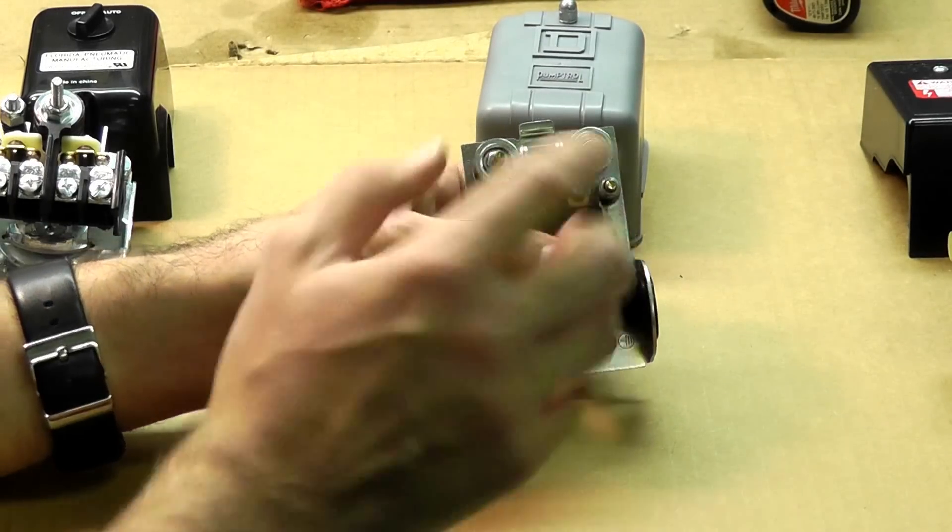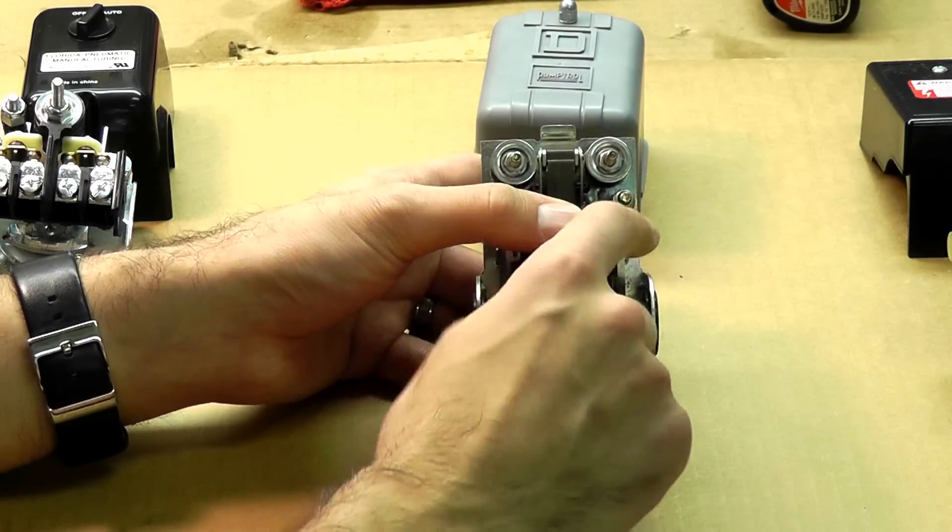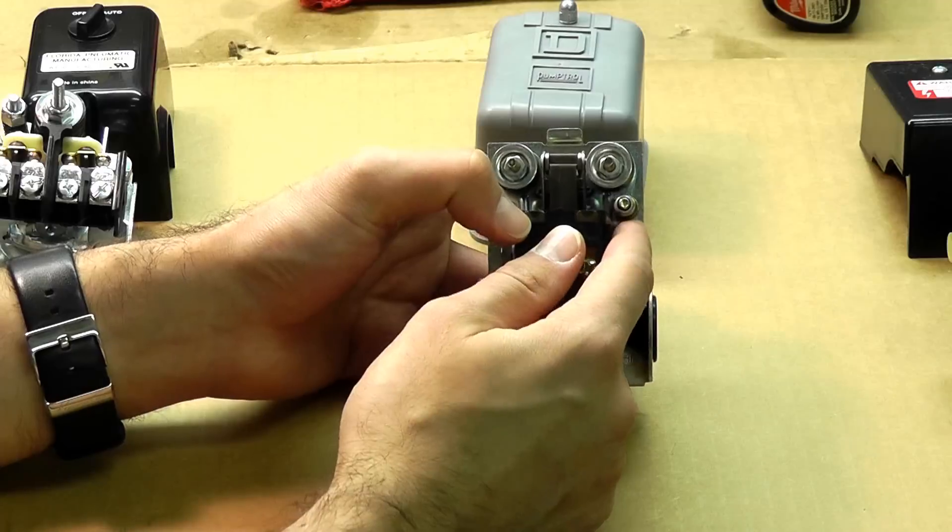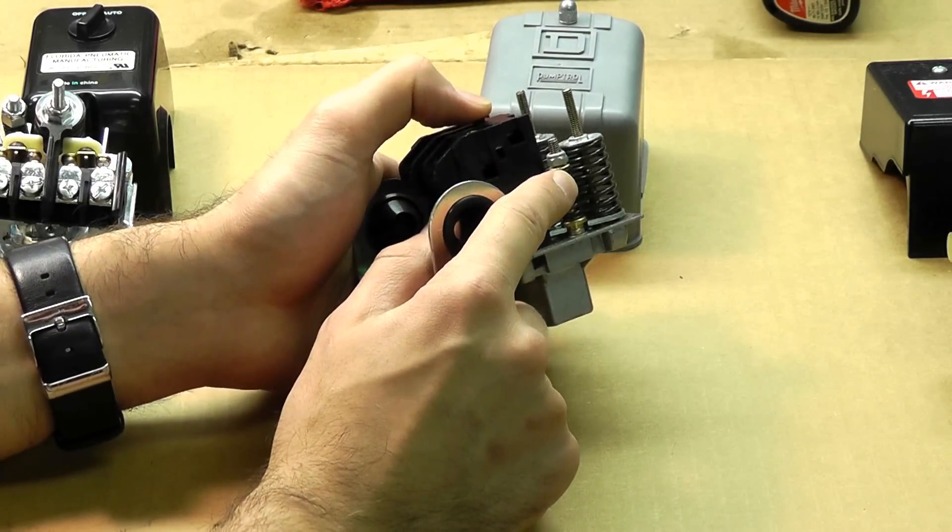Usually you'll turn this about one revolution and it will increase the cutoff pressure. So this is just the pressure setting for the cutoff—the differential main adjustment screws.